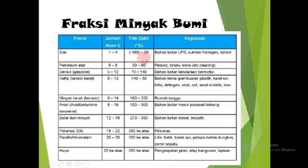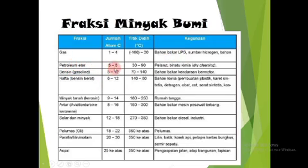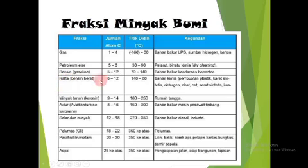Fraksi minyak bumi hasil pengolahan beserta susunan atom C dan titik didihnya: yang pertama, gas — atom C 1 hingga 4, titik didih -160 hingga 30°C, gunanya untuk LPG dan sumber hidrogen sebagai bahan bakar. Berikutnya, petroleum ether — jumlah atom C 5 hingga 6, suhu 30 hingga 90°C, gunanya sebagai pelarut. Bensin — jumlah atom C 5 hingga 12, suhu 70 hingga 140°C, untuk bahan bakar bermotor. Nafta — atom C 6 hingga 12, titik didih 140 hingga 180°C, untuk bahan bakar dan pembuatan plastik, karet, dan sebagainya.